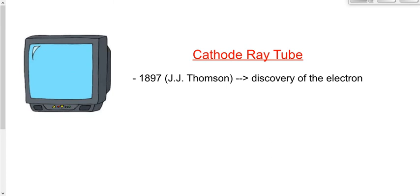In 1897, J.J. Thomson came along and performed an experiment with a cathode ray tube. He didn't invent the cathode ray tube — he used the already invented cathode ray tube to discover the electron. Here's what the apparatus or the experiment looked like.